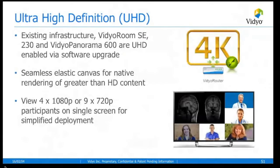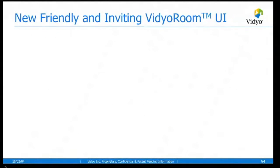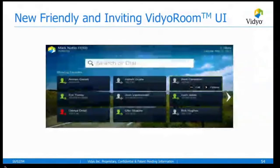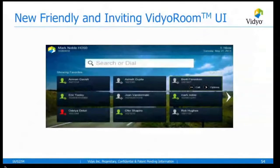All the room systems have a user interface which is friendly and easy to use. It's similar to the desktop and mobile applications, where you have a presence-based phone book where you can dock your regular users and see them online or offline. All room systems — whether HD40, HD100, HD230, or the SE — have the same interface and allow you to put your own background screen on it, then dock regular users or search and dial from the home page.